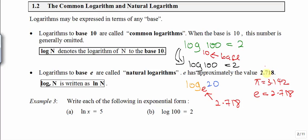If you cannot remember this number, you can press your calculator — e to the power of 1 — and it will give you this value. To simplify the writing for log base e, we use the symbol ln to represent log base e. So log base e of 20, the equivalent form would be ln 20. This is pronounced as ln 20.